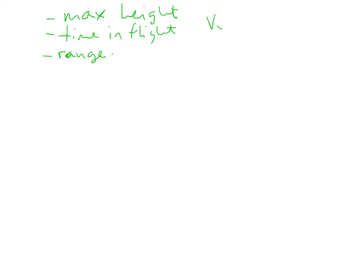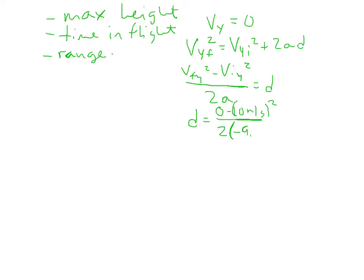At the maximum height, the y velocity is equal to zero, just like a vertical motion problem. We can use this relationship. vyf squared is equal to vyi squared plus 2ad. And we can rearrange that to vy squared minus vyi squared divided by 2a. That now is equal to d. And we solve that out. We get d is equal to 0 minus 10 meters per second. And that's squared divided by 2 times negative 9.8 meters per second. And the answer to that is 5.10 meters. So that's the max height.